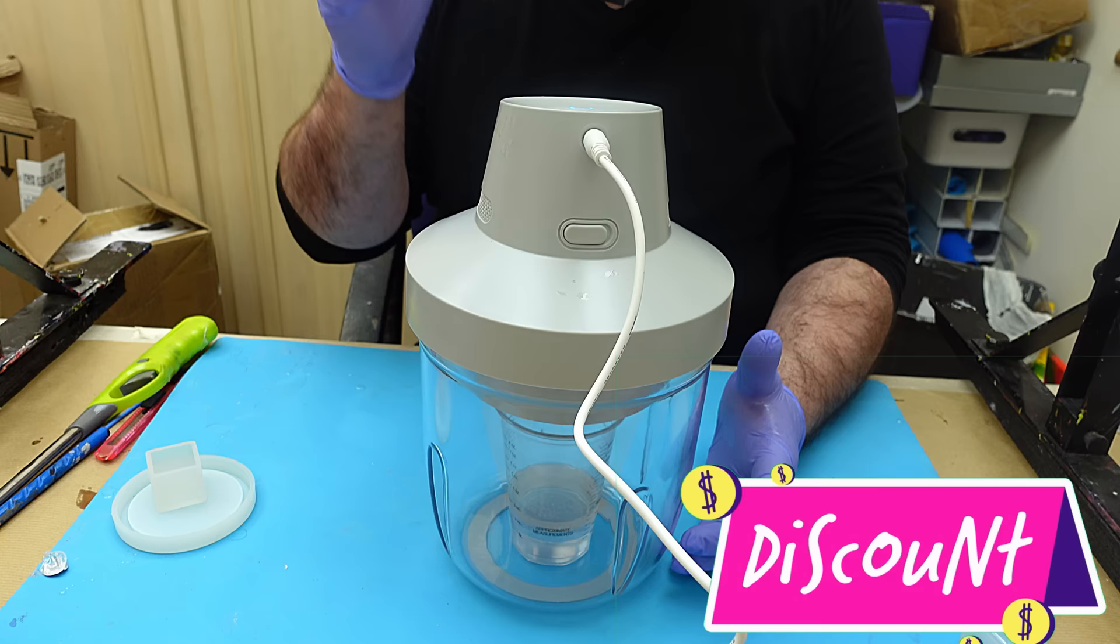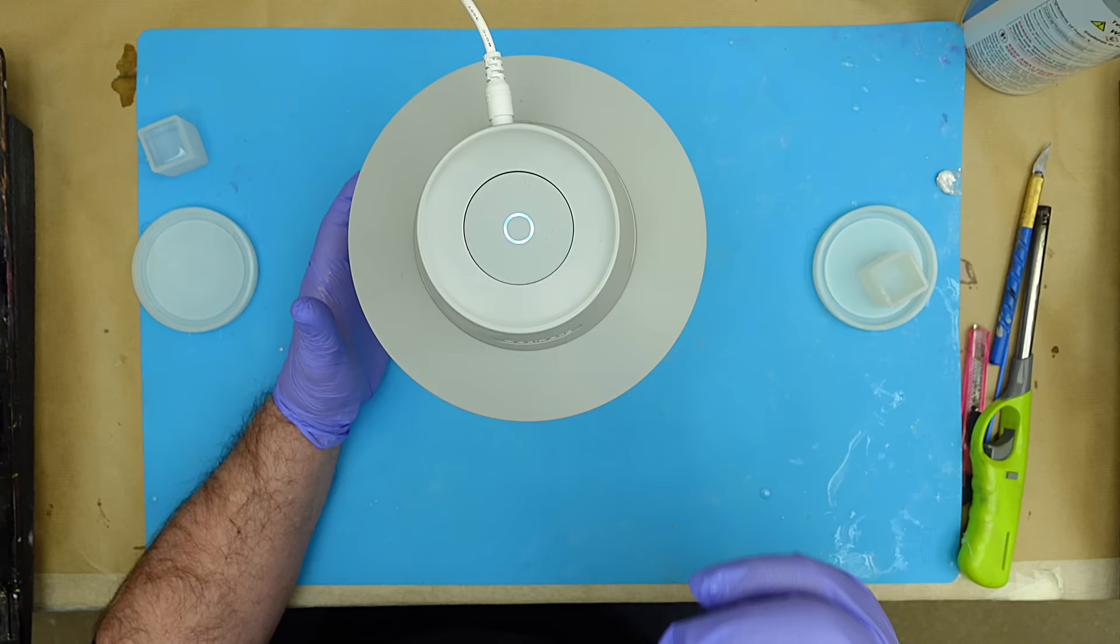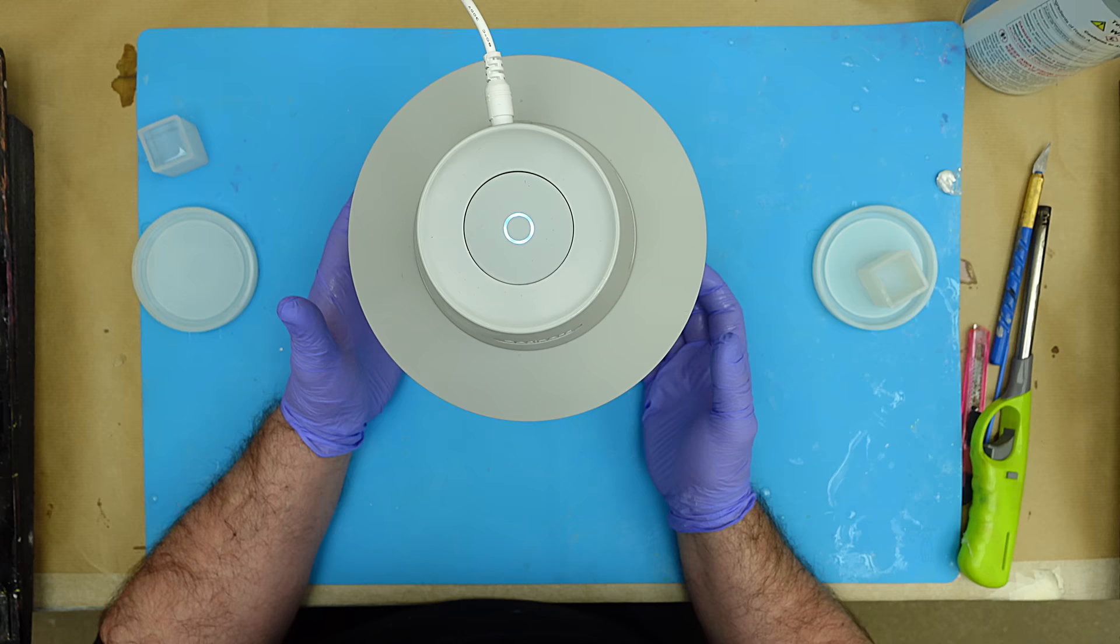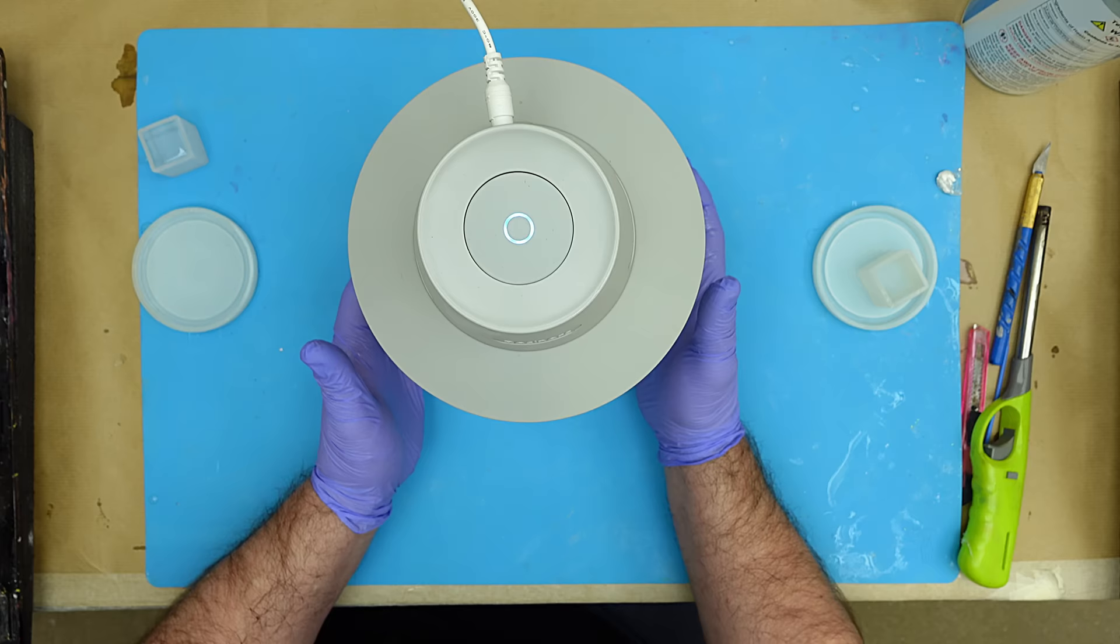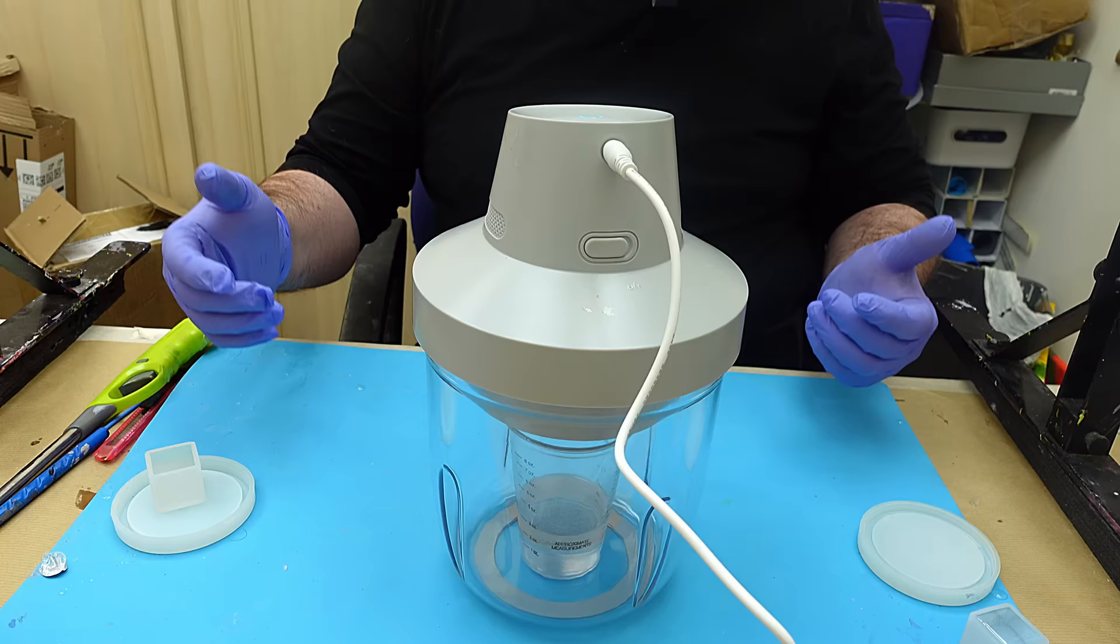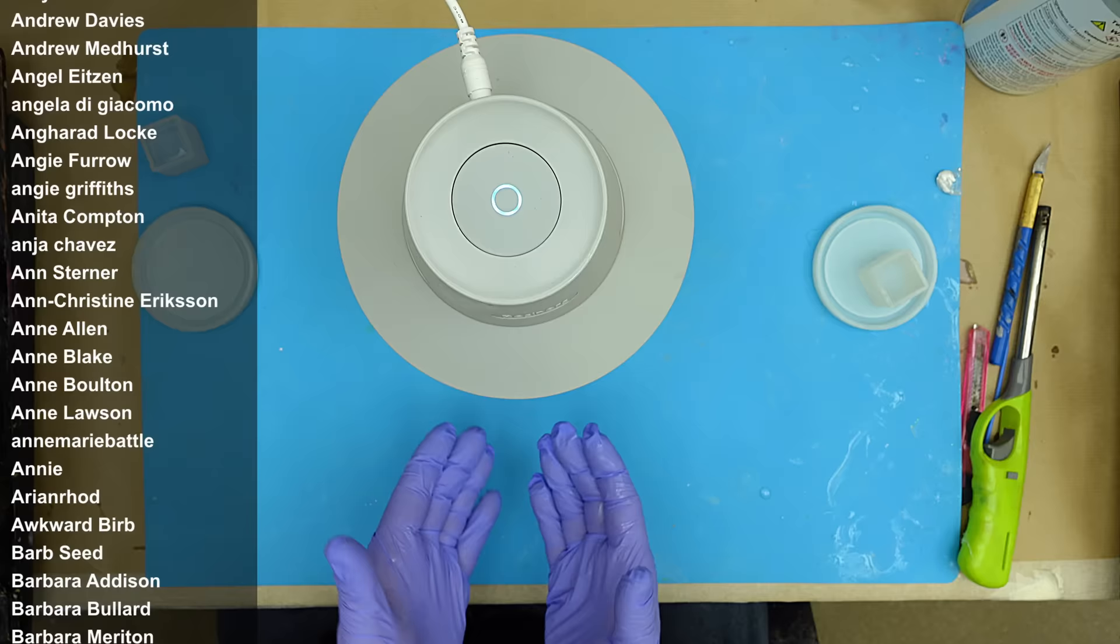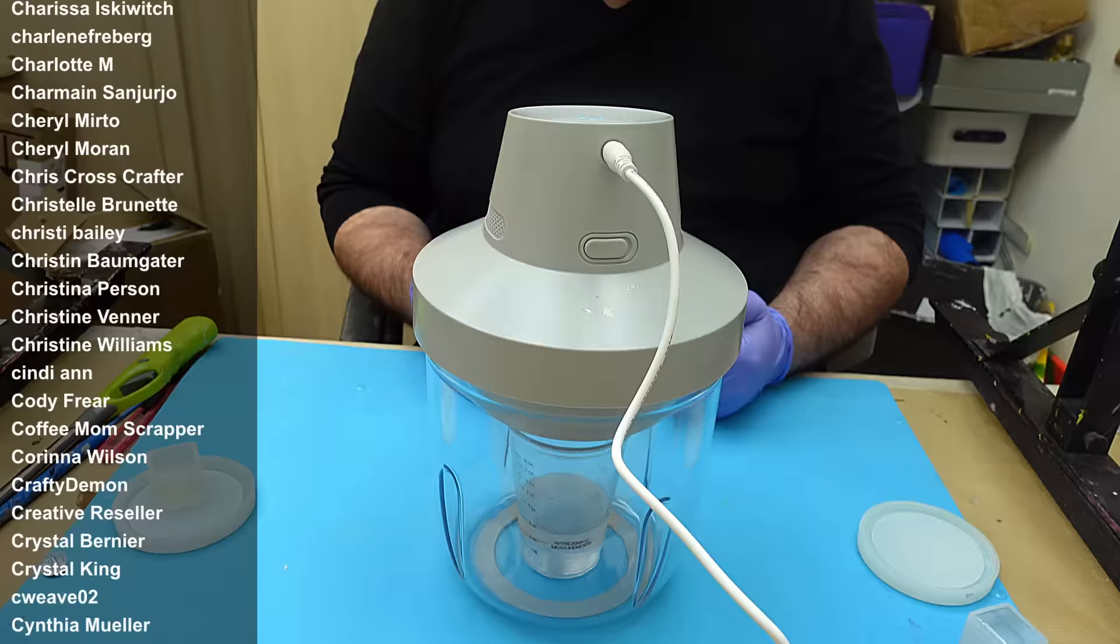But I also have a 10% discount code that you can add as well and that will take it down to $87.99 which is a great price. Makes it much more affordable for those resin users that aren't doing it as often or just can't afford to spend that sort of money on it. The proof will be in the pudding whether this works. What we're going to do now is leave this to do its magic and then I'll show you what to do next. But don't forget this code's in the description below.